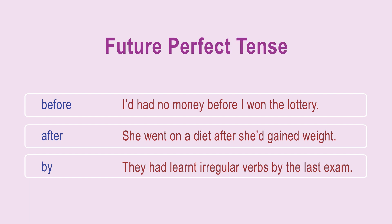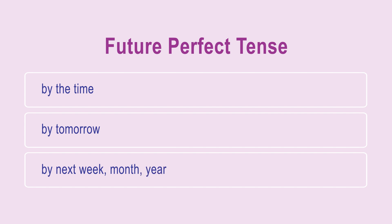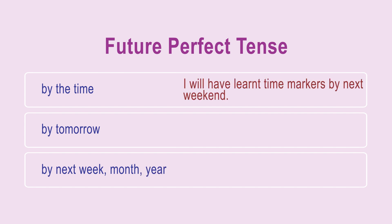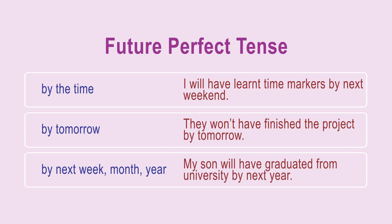The following time markers will help us to identify the future perfect tense: by the time, by tomorrow, by next week/month/year. Here are the examples: I will have learnt time markers by next weekend. They won't have finished the project by tomorrow. My son will have graduated from university by next year.